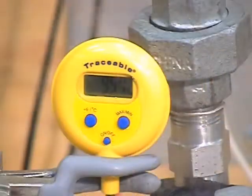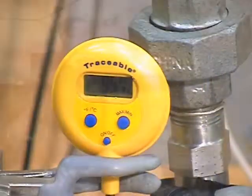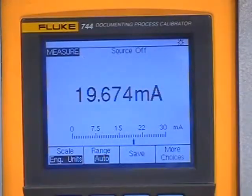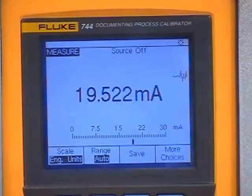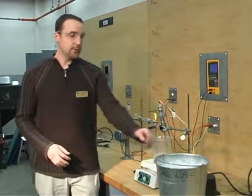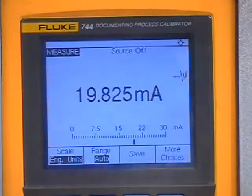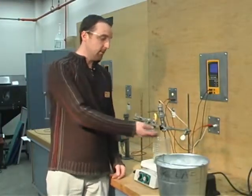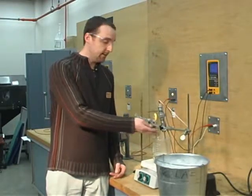Currently we are reading 99.8 degrees Celsius, and our transmitter is reading 19.635, but it is slightly changing so I will wait. Currently we are at 99.8 degrees Celsius, and we are reading 19.84 milliamps. Now we are going to decrease our temperature by 10 degrees using ice. We will slowly turn off our heat and introduce the ice. Our next point will be 90 degrees Celsius.